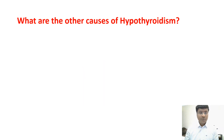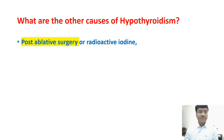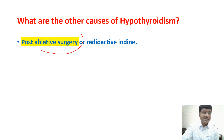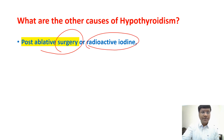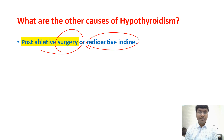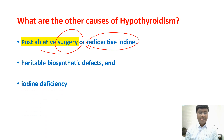What are the other causes of hypothyroidism? They include post-ablative surgery or radioactive iodine. For example, if an individual has a large goiter causing compressive symptoms like dysphagia, dyspnea, and hoarseness of voice, surgical resection of the thyroid gland results in hypothyroidism. Radioactive iodine — iodine-131 — is used to treat hyperthyroidism, but in excessive doses it can cause permanent hypothyroidism. Other causes include heritable biosynthetic defects and iodine deficiency.